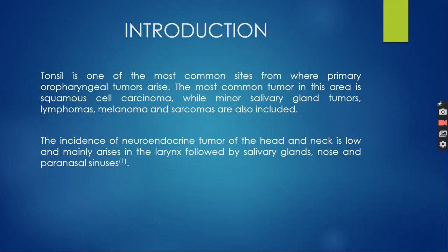Introduction: Tonsil is one of the most common sites from where primary oropharyngeal tumours arise. The most common tumour in this area is squamous cell carcinoma, while minor salivary gland tumours, lymphomas, melanoma and sarcomas are also included. The incidence of neuroendocrine tumour of head and neck is low and mainly arises in the larynx, followed by salivary glands, nose and paranasal sinuses.